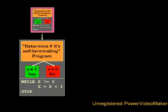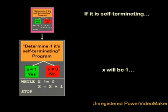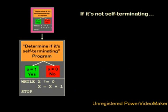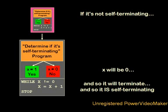Let's walk through what happens. If our program is self-terminating, then it will set x equal to 1, and then it will loop forever — so it's not self-terminating. If it is self-terminating, it's not. If it's not self-terminating, x will be 0, and so it will terminate — meaning it is self-terminating. So if it is self-terminating, it's not; and if it's not, it is. Exactly what we saw before.